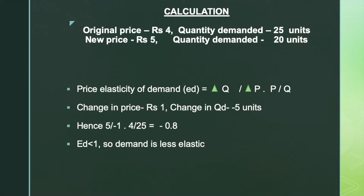From the original and new prices, we calculate the change in price: Rs 4 minus Rs 5, which is minus 1. The change in quantity demanded is 25 minus 20, which is 5 units.